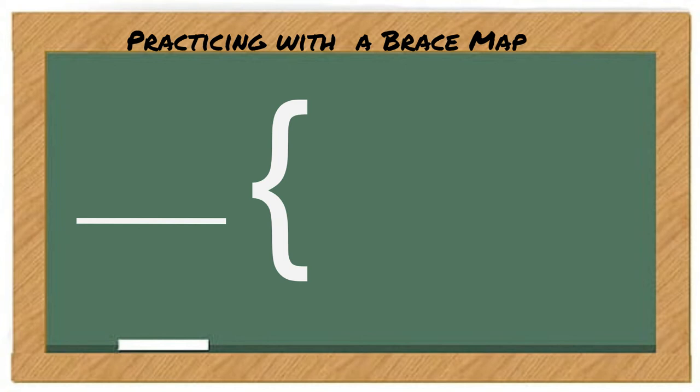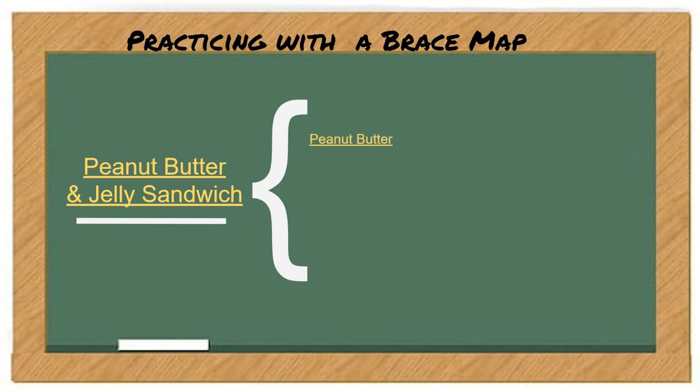Let's practice with a brace map. We're going to start with something simple. We're going to start with a peanut butter and jelly sandwich. And I hope you're going, oh yeah, I've got this. Tell me one part that makes up the peanut butter and jelly sandwich. Hopefully, you all said peanut butter. Something else? You probably said jelly. And I'm pretty sure you guys at this point have already said bread.